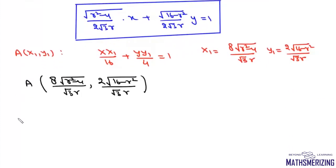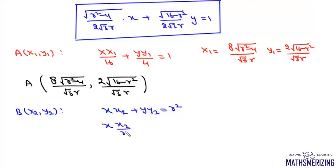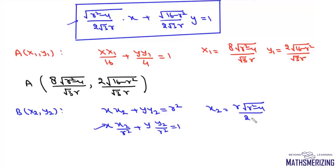Now we find the point of tangency on the circle. Let B = (x₂, y₂). The tangent to the circle at B is x·x₂ + y·y₂ = r², or x·x₂/r² + y·y₂/r² = 1. Comparing with our tangent equation gives: x₂ = r√(r² − 4) / (2√3) and y₂ = r√(16 − r²) / (2√3).